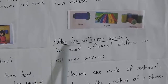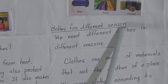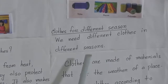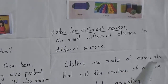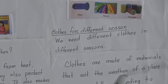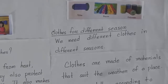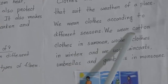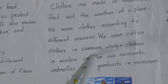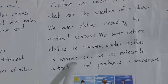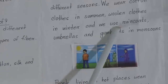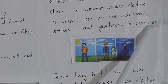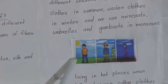Here is a topic: Clothes for Different Seasons. We need different clothes in different seasons. Clothes are made of materials that suit the weather of a place. We wear clothes according to different seasons — we wear cotton clothes in summer, woolen clothes in winter, and we use raincoats, umbrellas, and gumboots in the monsoon season.